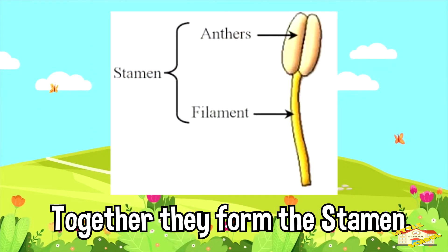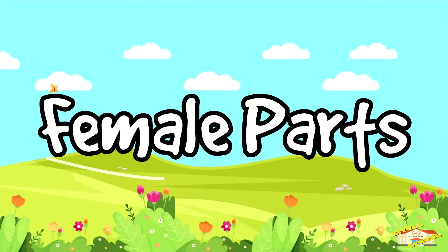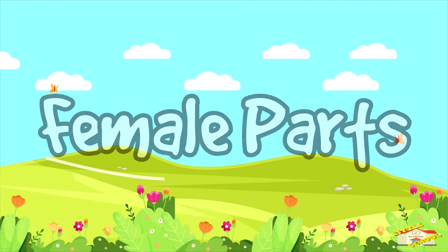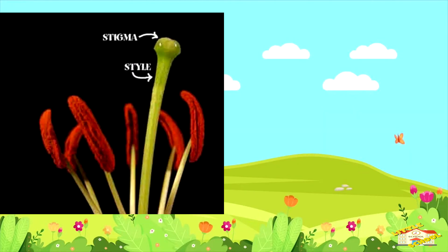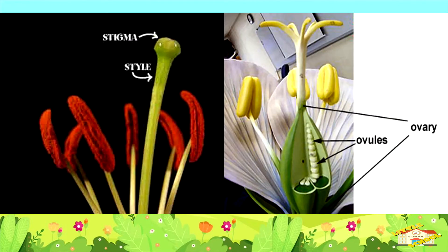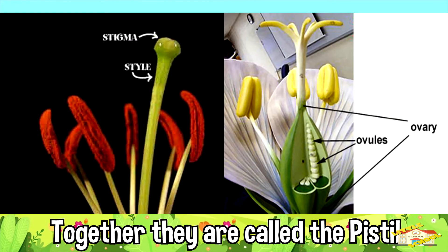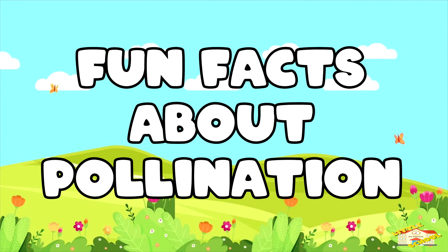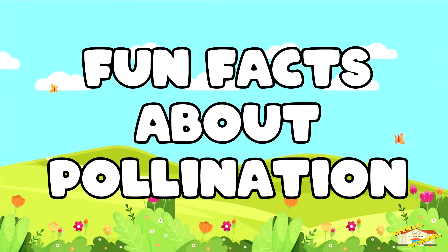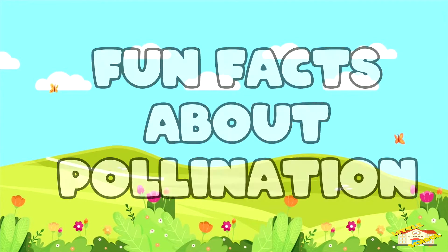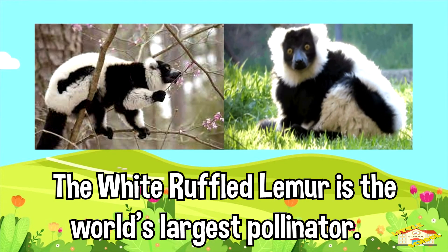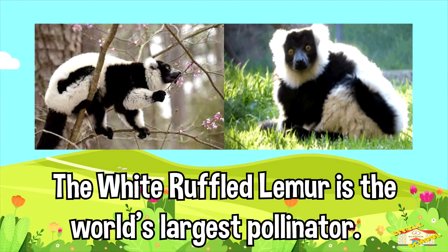Together they are called the stamen. Next would be the female parts: the stigma, style, ovary, and ovules. Together they are called the pistil. Here are some fun facts about pollination — the white ruffled lemur is the world's largest pollinator.